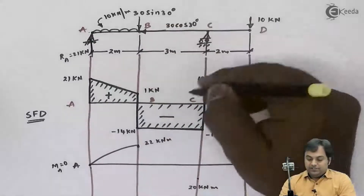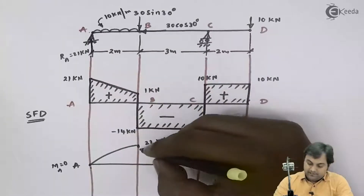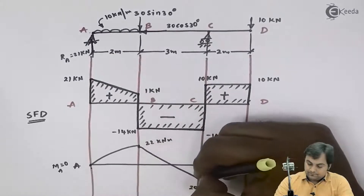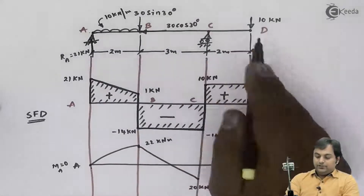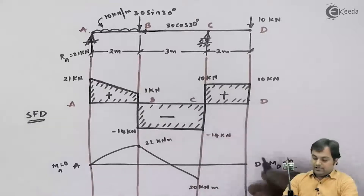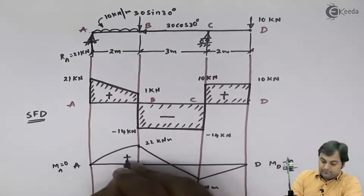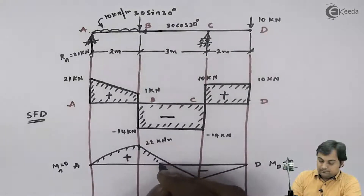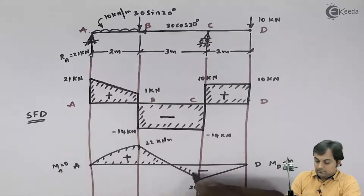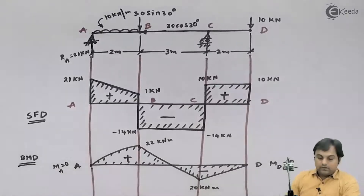Between B and C there is a constant load — shear force was constant — so the bending moment is an inclined line. Between C and D, shear force is also a constant straight line, so the bending moment is again an inclined line. Here I have plotted the completed bending moment diagram.